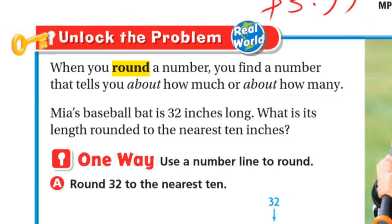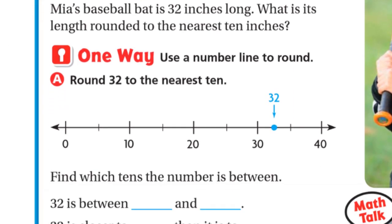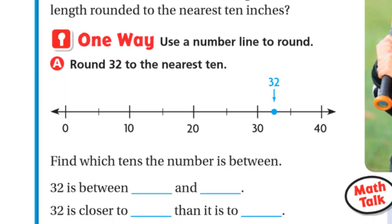When you round a number, you find a number that tells you about how much or about how many. May's baseball bat is 32 inches long. What is its length rounded to the nearest ten inches? One way: use a number line to round. So, round 32 to the nearest ten.